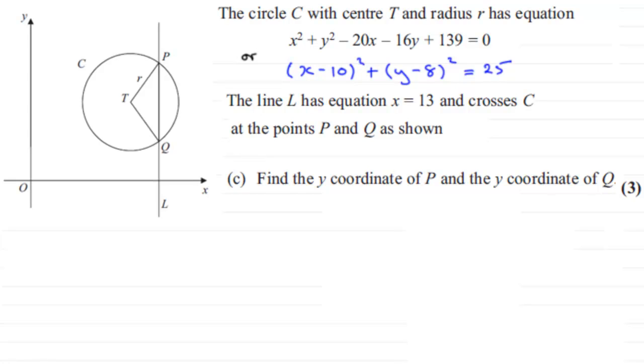Hi. Now in this next part, part C, we're told that we've got this line L which has the equation x equals 13 and crosses this circle C at the points P and Q. And what we've got to do is find the y-coordinates of P and of Q.